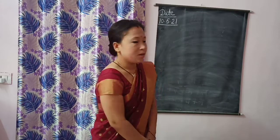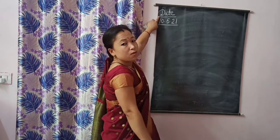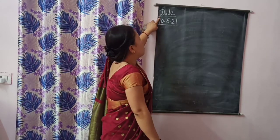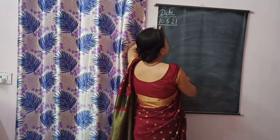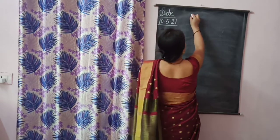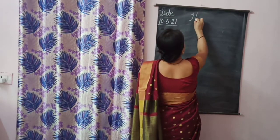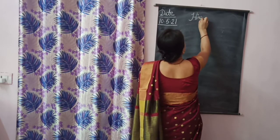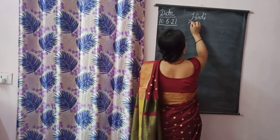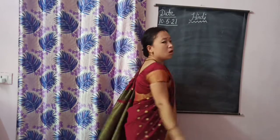This is your Hindi period, UKG class. You have to put the date: 10/5/21. Subject is Hindi. Today we will revise A se Ghatak — Swar and Vyanjan. Swar kone kone se hote hain? A se Ahaatak. Today we will revise it.